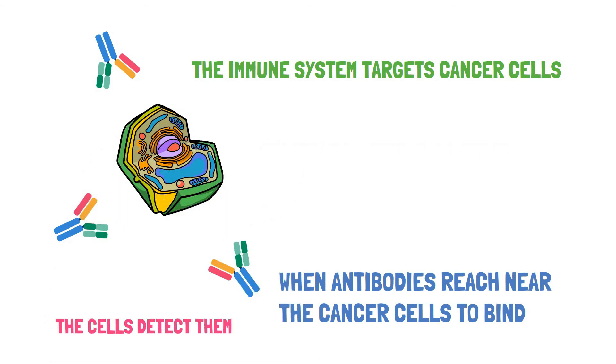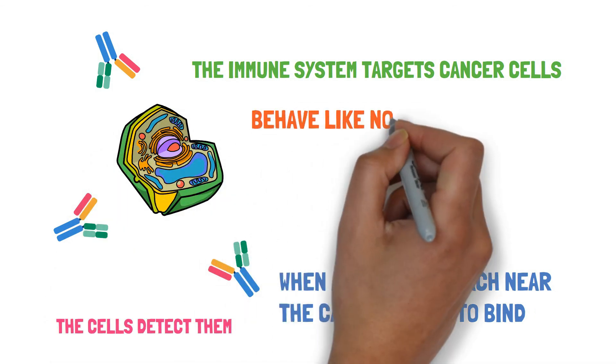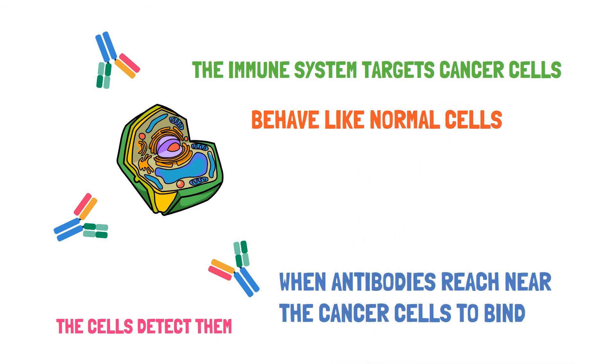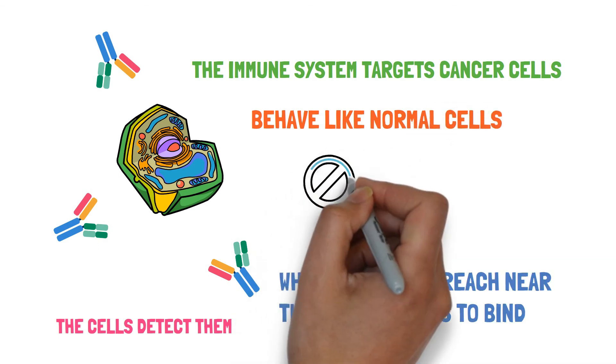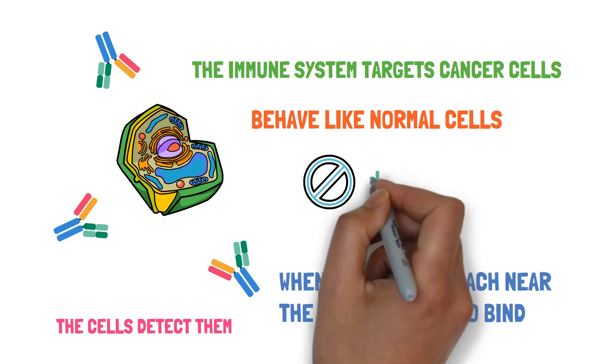They start to behave like normal cells that are devoid of these tumor receptors and these cancer cells are easily able to fool the immune system.